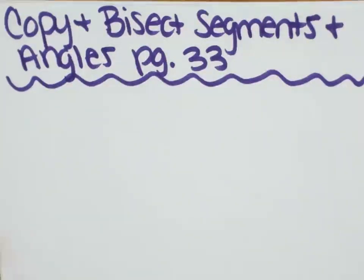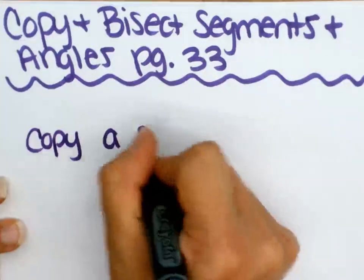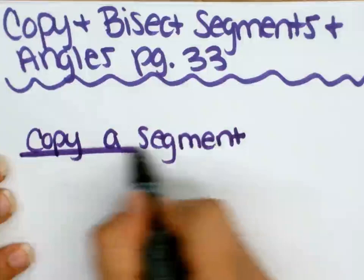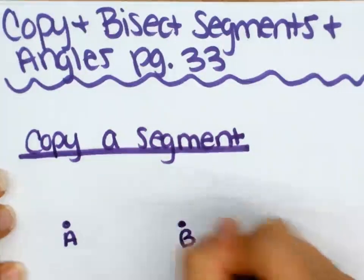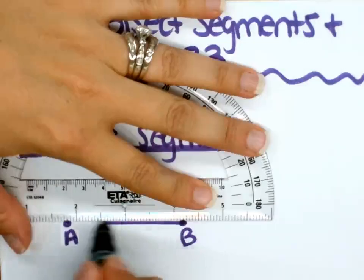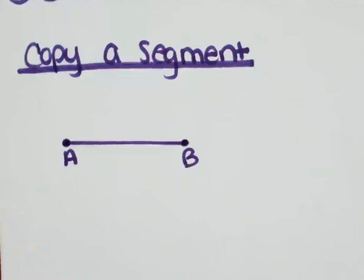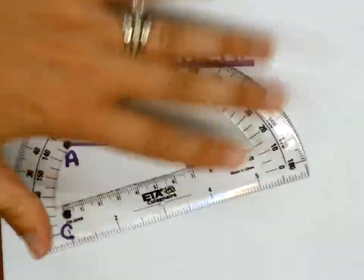All right, so the first thing we're going to do is we're going to learn how to copy a segment. Okay. The first thing we need to do is we need to start with a segment. All right, so here is my segment that they gave me that's provided and I'm going to copy this. I'm going to make an exact duplicate of that. So the first thing I'm going to do is I'm going to put point C and I'm going to draw out a line.